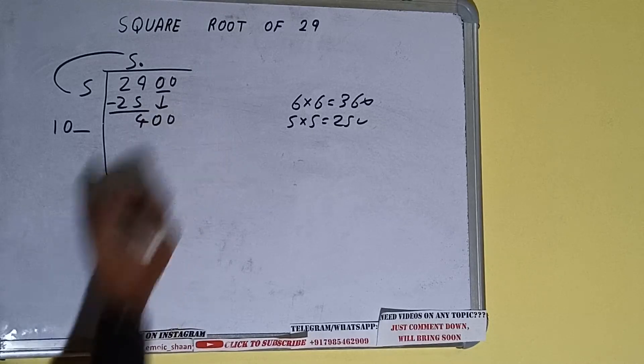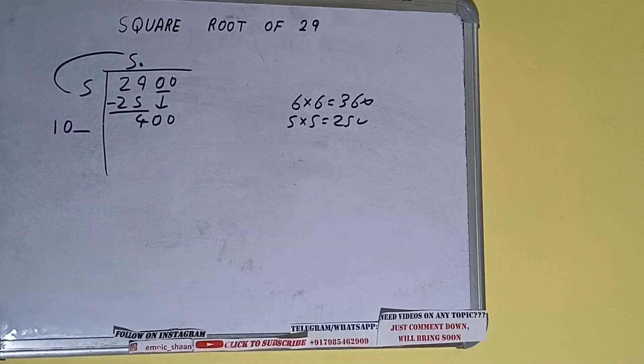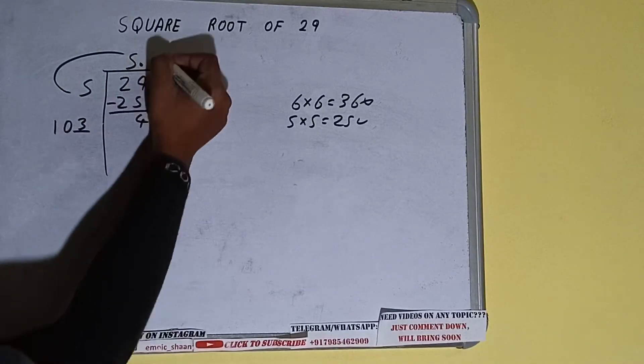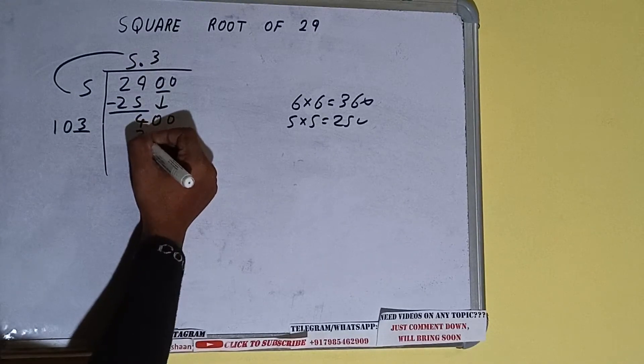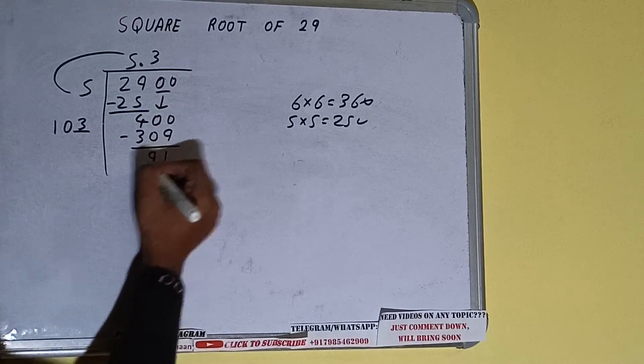number will become as 400. Now whatever number we write here we have to write here also. So we can write 3 here and 3 here, it will be 309. Subtract, 91 will be left.